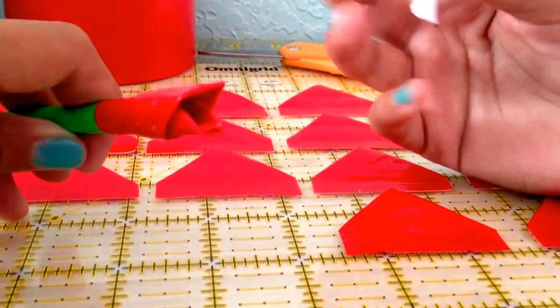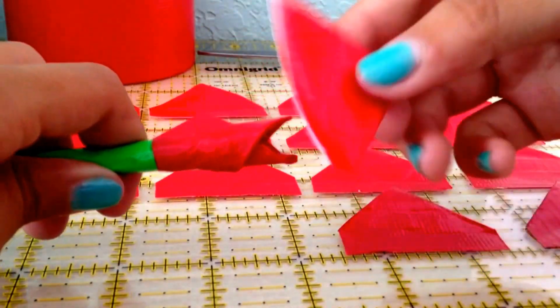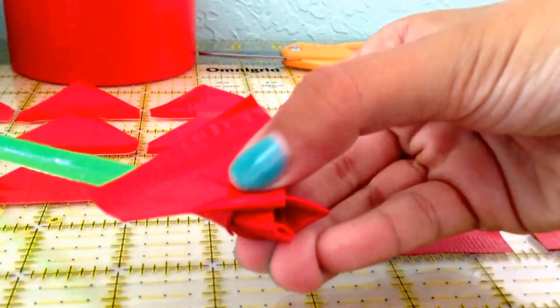Now, take your next triangle and place it in the middle where these two petals are, right there, and fold it around.